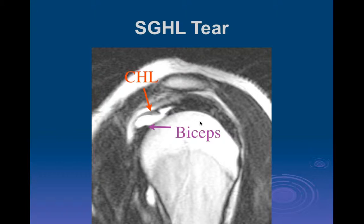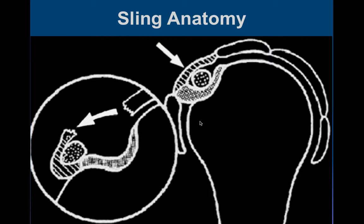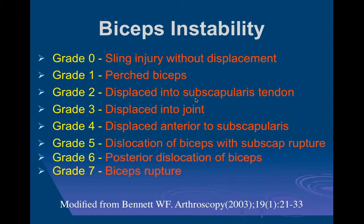The capsule goes all around the joint, and in certain areas it's thicker — that's what the ligaments are. When you have an unstable biceps tendon that starts to sublux, you can have tears of any of these surrounding structures. It can be superior to the coracohumeral ligament, or you can have a tear of the superior glenohumeral ligament — either one will result in a nonfunctional sling mechanism.